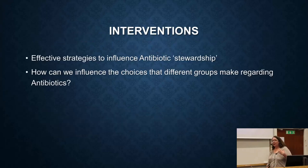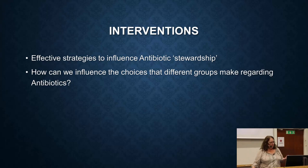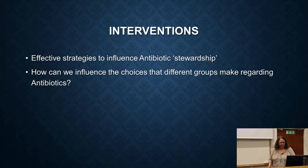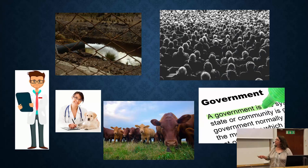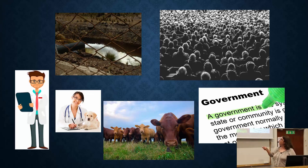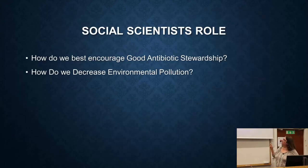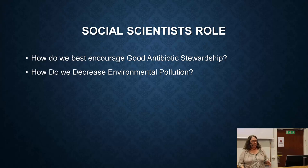The next theme, which you've heard a lot about in the last couple of lectures, is interventions — how do we influence people to do the right thing? The people we want to influence are doctors and veterinarians, the livestock industry, and we want to affect environmental pollution. Governments are involved in all of this, and people like you. The social scientist's role is how do we encourage good antibiotic stewardship and decrease environmental pollution? There's no clear answer, but there are hints.